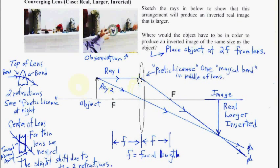Notice that light doesn't bend in the middle of the lens. It bends toward the normal at the first air-glass interface, and at the glass-to-air interface it bends away from the normal. We use poetic license and the rule that says it bends once magically in the middle. This will head toward F anyway, so we get the same result with a thin lens — we don't have to worry about this approximation.